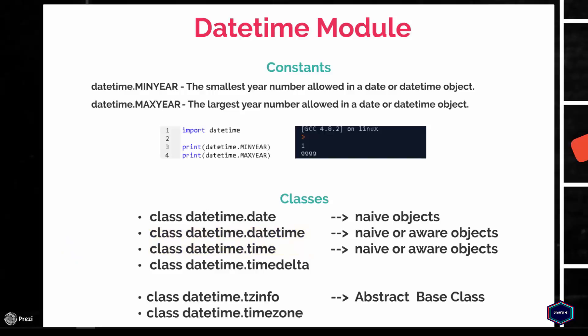In this tutorial, I will cover a short example of how to create an aware object using both the timezone class and the pytz module. It is important to mention that all date, datetime, time, and timedelta objects are immutable. This means that they can be used as dictionary keys, placed in sets, and used in a variety of other operations.